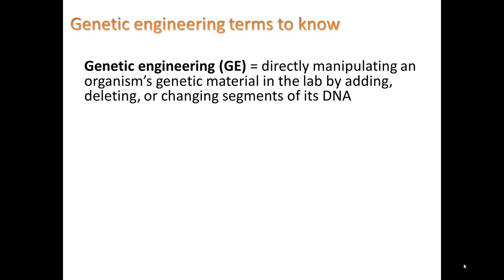In traditional crossbreeding, you are taking genes from one member of a species into a different member of the same species that might have different properties — but it's still the same species. Here we're talking about taking DNA from one organism into a different organism of a different species.